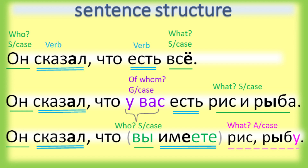Он сказал что у вас есть рис, рыба. He said that you have rice and fish. In this last sentence, Вы is in the subjective case which takes the verb иметь, and the nouns рис and рыбу are in the accusative objective case because a phrase cannot have two subjects.